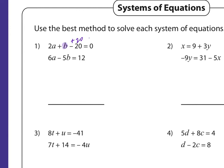No matter what, I need to make sure they're in column. I'm going to add 20 to both sides, so I get 2a plus b equals 20. Then, because I'm doing it by elimination, I need to multiply this by negative 3 and distribute — I get negative 6a minus 3b equals negative 60.